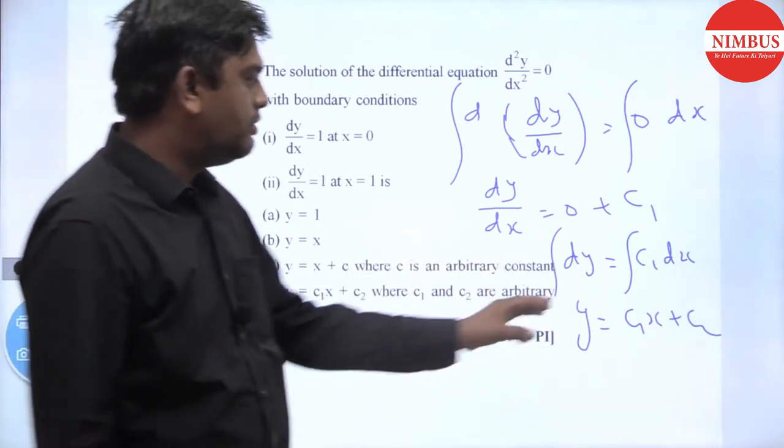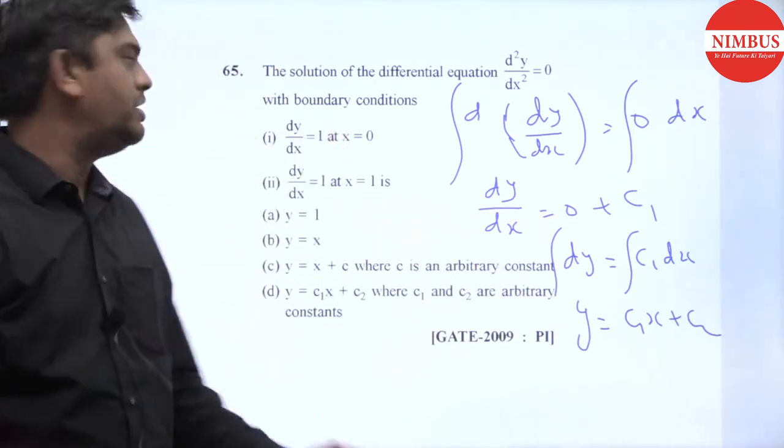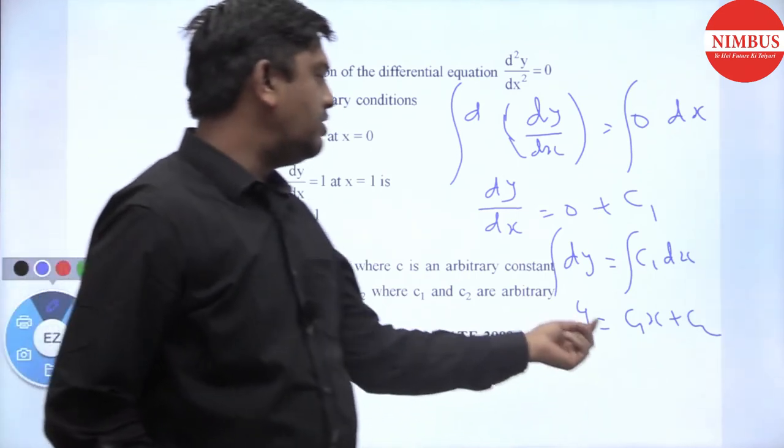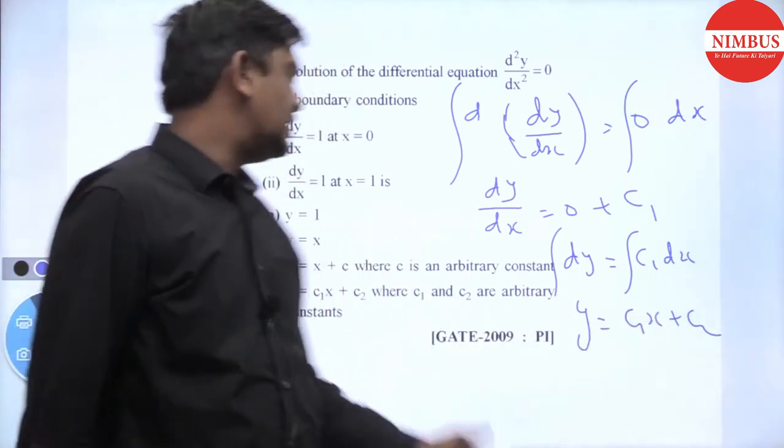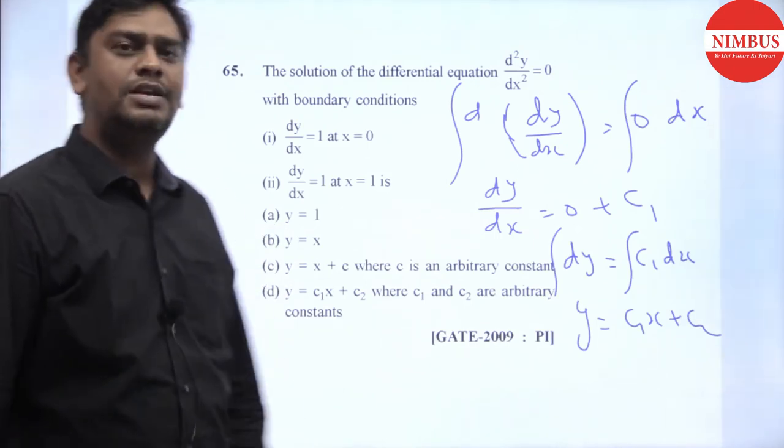If we put dy/dx, the value is c₁. Again, when we put the dy/dx condition, c₁ value will be 1. So y will be x + c₂, or simply x + c. If we check option number C, the answer will come. Thank you.